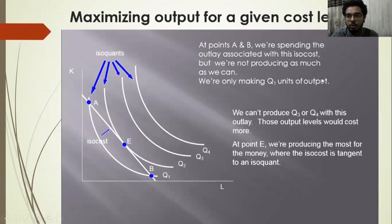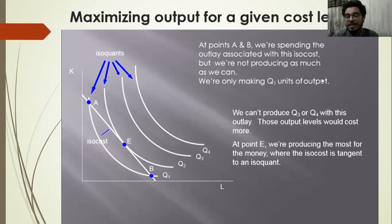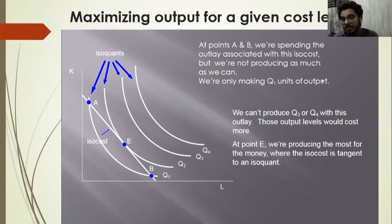For maximizing output for a given cost level: at points A and B, I am utilizing the entire budget but not producing the maximum, because I am on isoquant Q1 which is lower. At point E, I am achieving a higher isoquant while spending the same budget — I am on the same isocost line but can achieve higher production. So E is the optimum. However, I cannot achieve Q3 or Q4 because that is beyond my financial capacity — my constraint is breached.